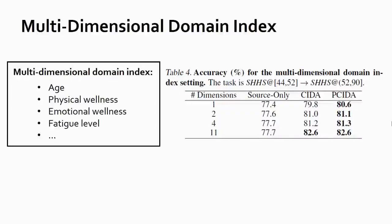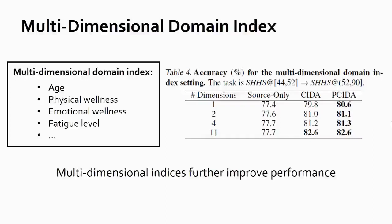Our experiments demonstrate that multi-dimensional domain indexes can further improve adaptation performance. Here we can see the domain indexes including age, physical wellness, emotional wellness, fatigue level, and other seven variables. We can see that performance consistently improves with more domain indexes.